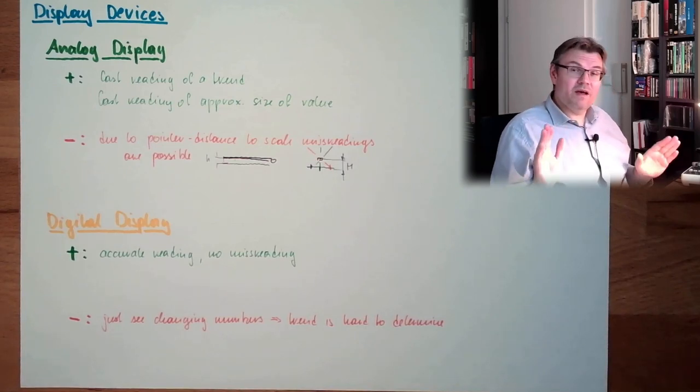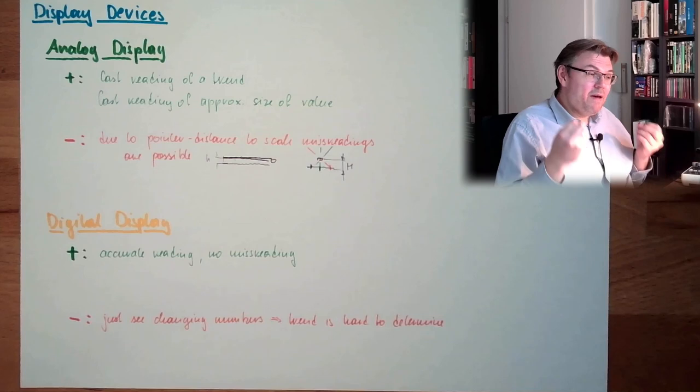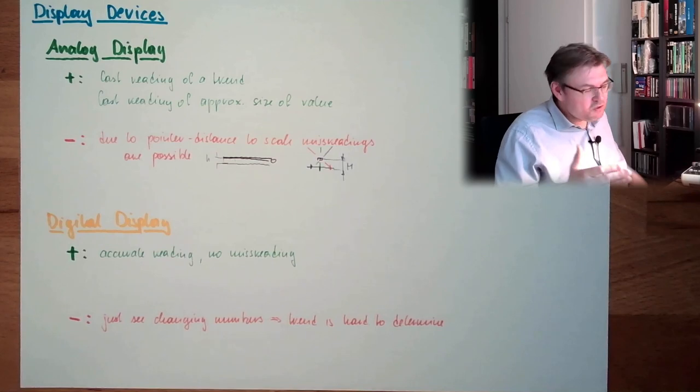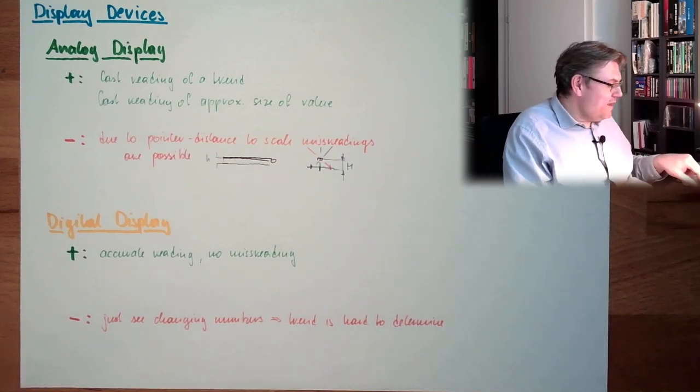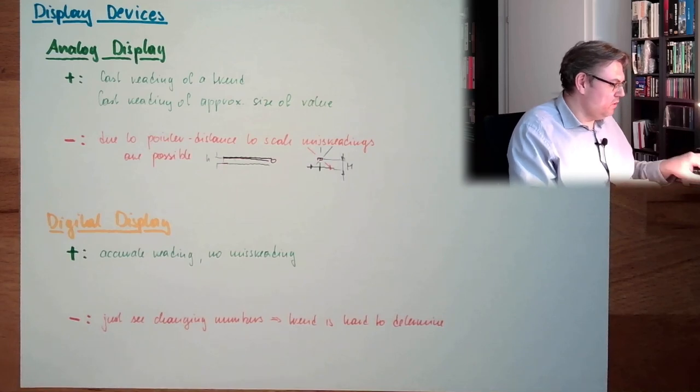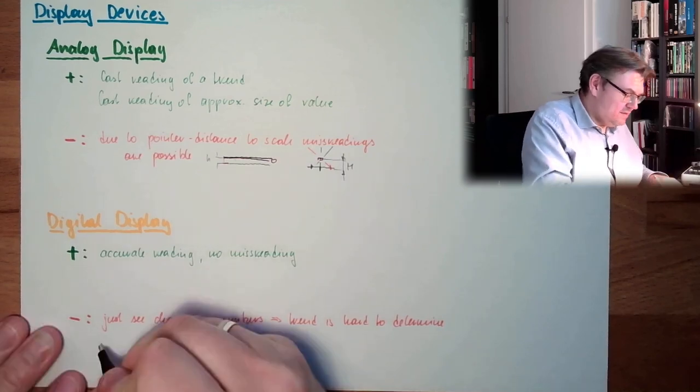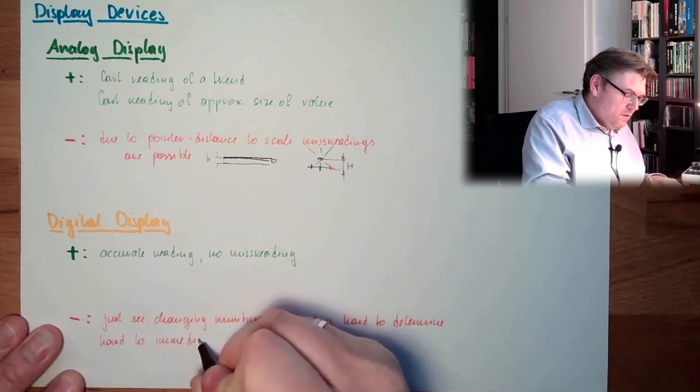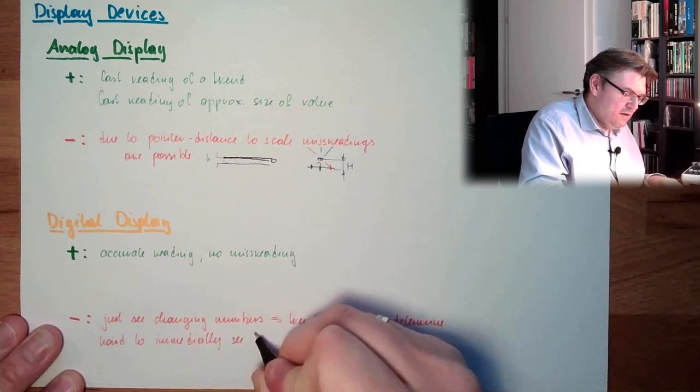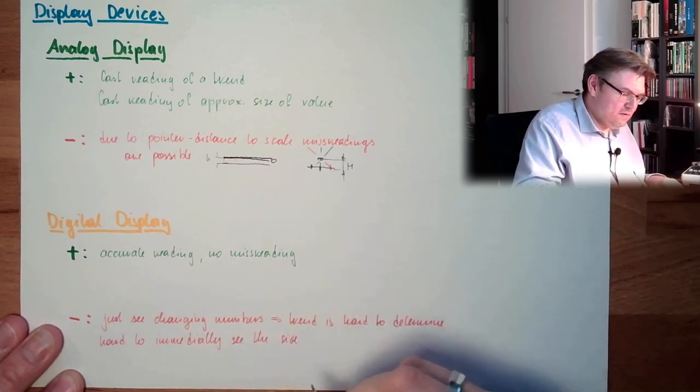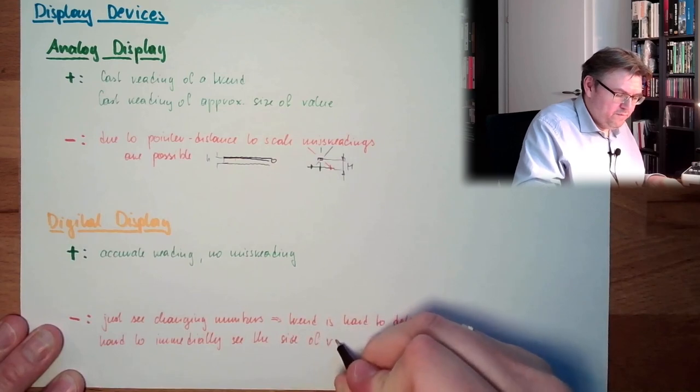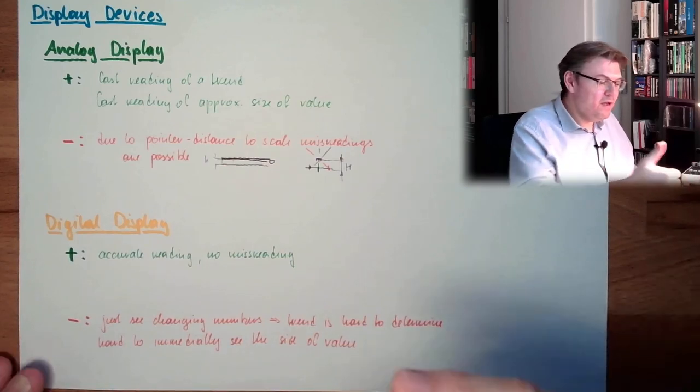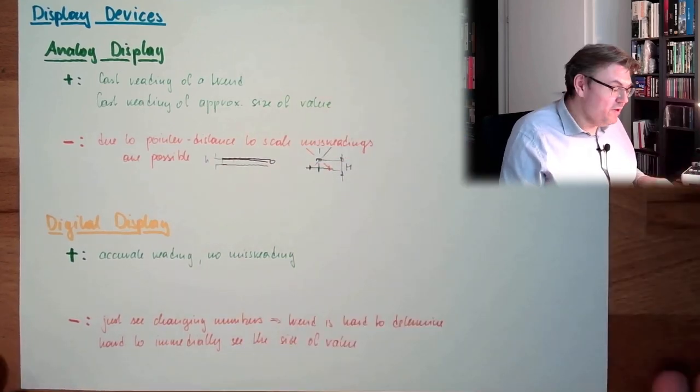If there are a lot of readings, a lot of numbers, just numbers, a big number usually looks similar to a small number, because usually you have leading zeros, and so on. So here, it's hard. It's hard to guess. Hard to immediately see the size of value. Is this really big? Is it small? I have to read it. Then I know. But I have to read it. Here, I already know, without really reading it.